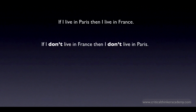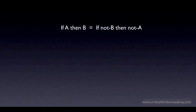The contrapositive is a conditional formed by switching the antecedent and the consequent and negating them. Here's the general rule: if A, then B can always be rewritten as if not B, then not A.